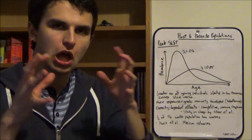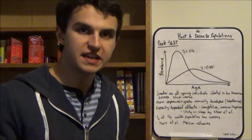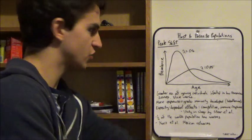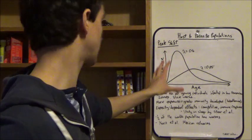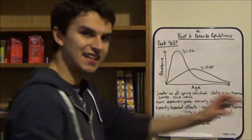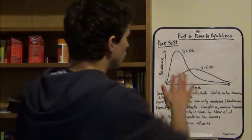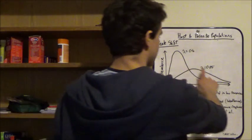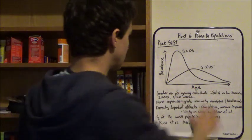Now we're going to zoom in more on the actual hosts. What's the distribution of infection among hosts of different ages? This is a phenomenon we call peak shift. On the x-axis we have age, and on the y-axis prevalence of infection. The younger you are, the greater the prevalence of infection. We have two different curves — one in a population where transmission of a particular parasite is high (lambda 0.4), and another which is much flatter, with a low transmission rate (lambda 0.05).